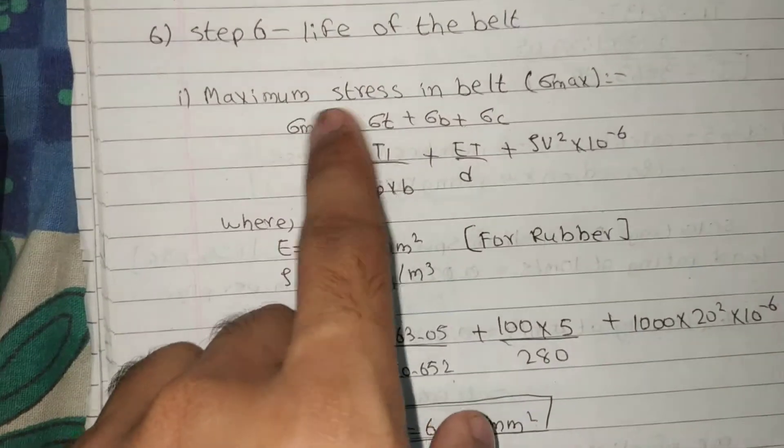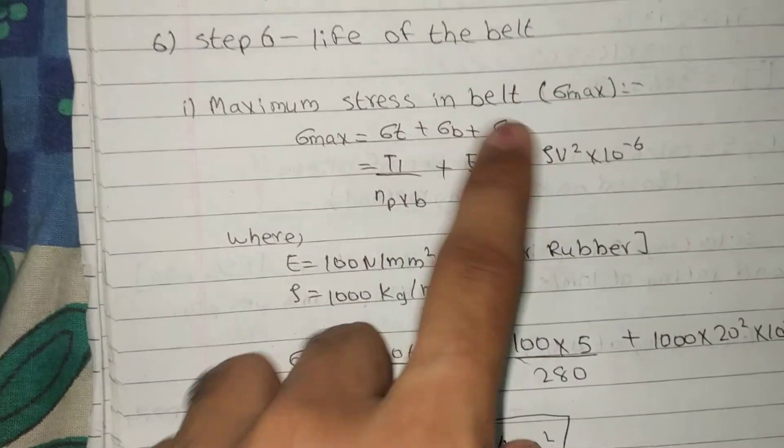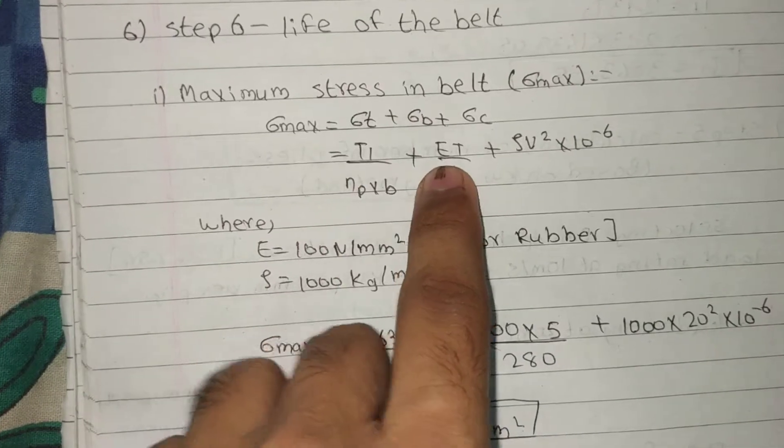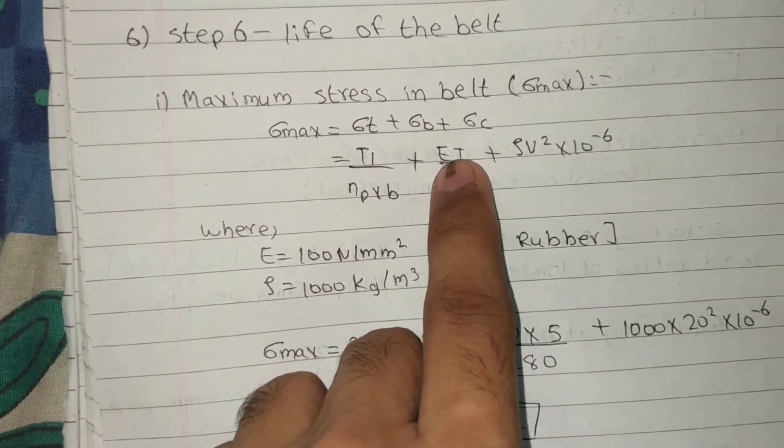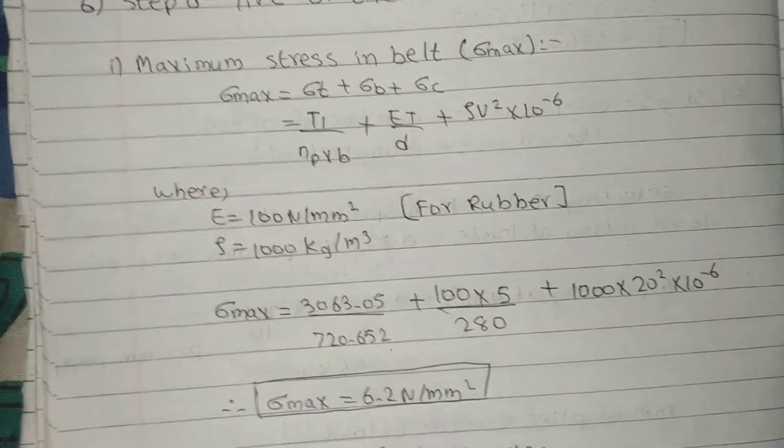Maximum stress in belt, sigma max. Sigma t plus sigma b plus sigma c. Sigma t ka formula this, sigma b ka this, sigma c ka this. E not given, so take 100. Rho 1000 kg per meter cube. This is sigma max.